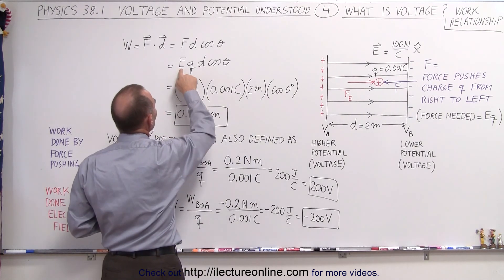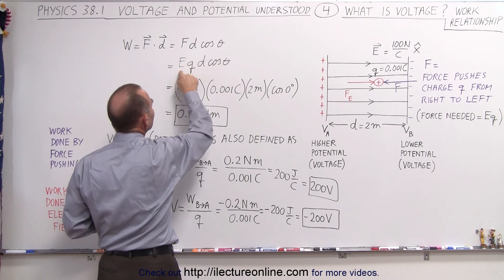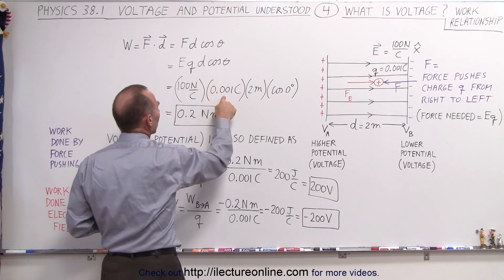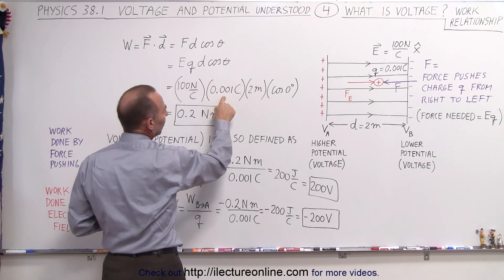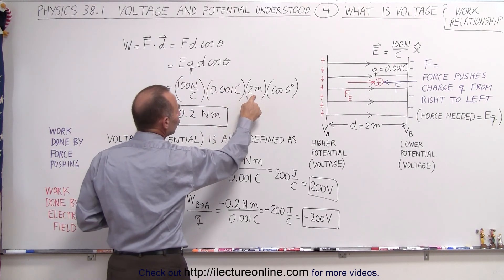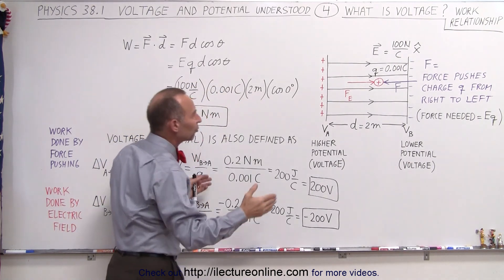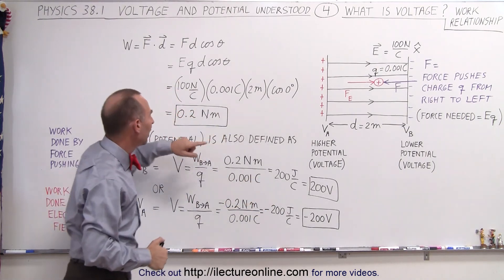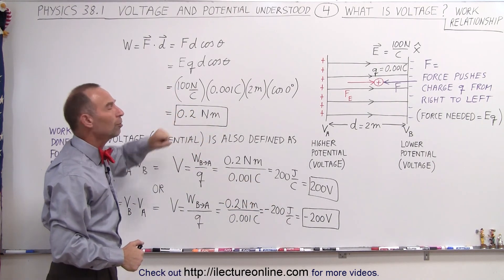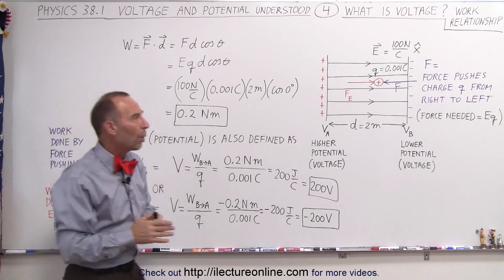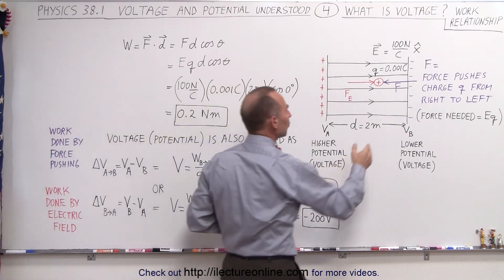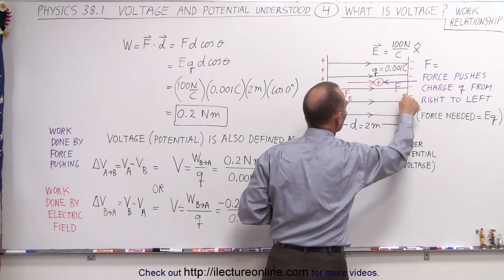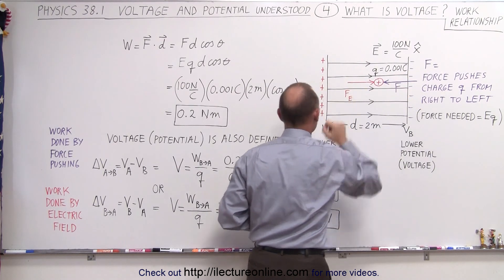So the force is E times Q: 100 N per Coulomb times a charge of 1/1000 of a Coulomb, times 2 meters of displacement, times cosine of 0 which is 1 — that gives us 0.2 N·meters. That's the work required to move a charge Q of 0.001 Coulomb from here to here.